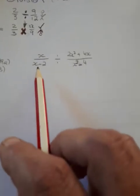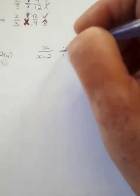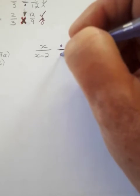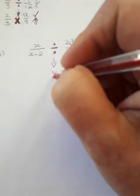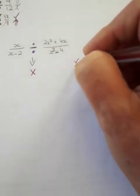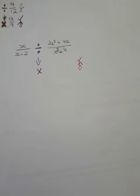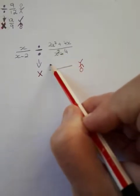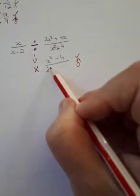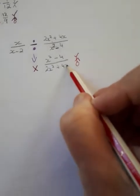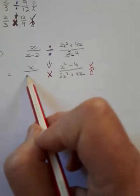Let me do one example completely. Looking at number one, always take note of your operation — this is a division, so that division needs to be changed to a multiplication with the reciprocal of the fraction behind it. This now becomes x squared minus 4 in the numerator, and the numerator now becomes the denominator — that is what reciprocal means. The fraction before the division remains exactly the same.